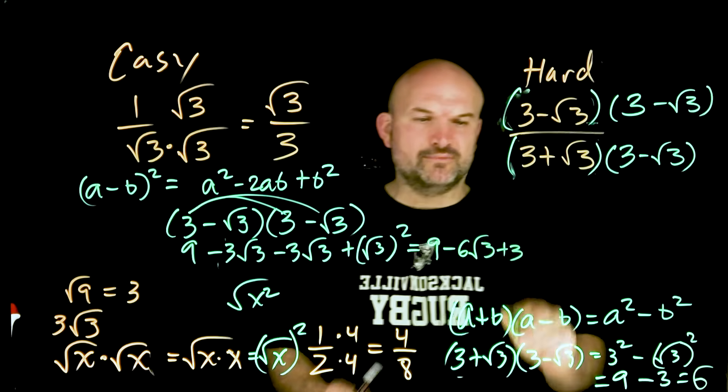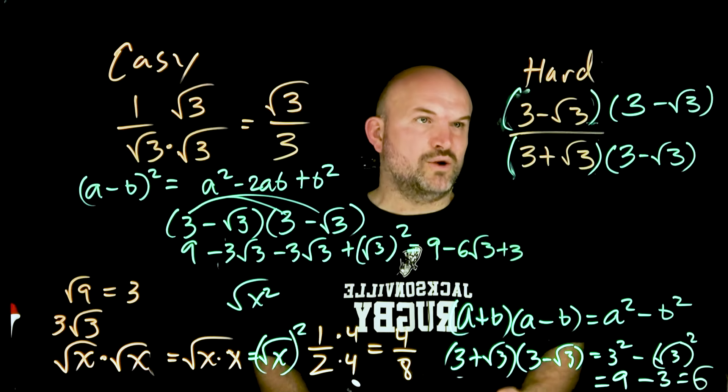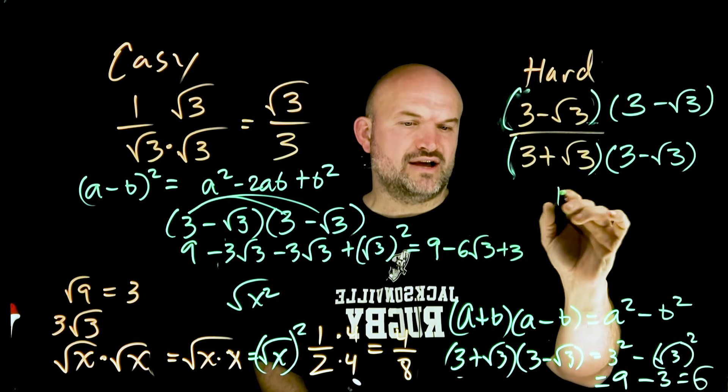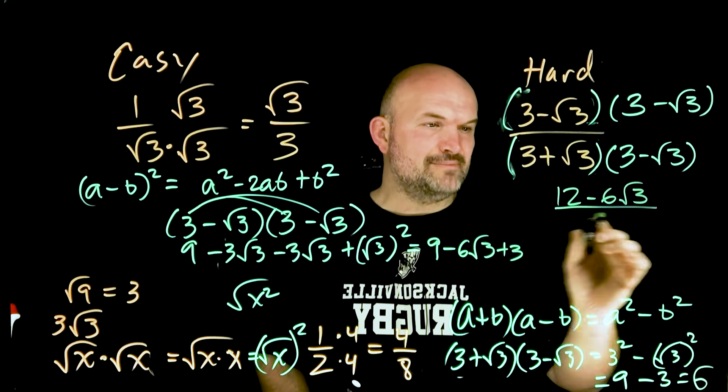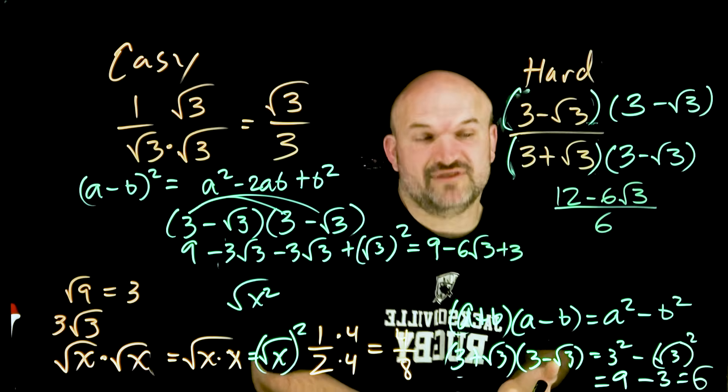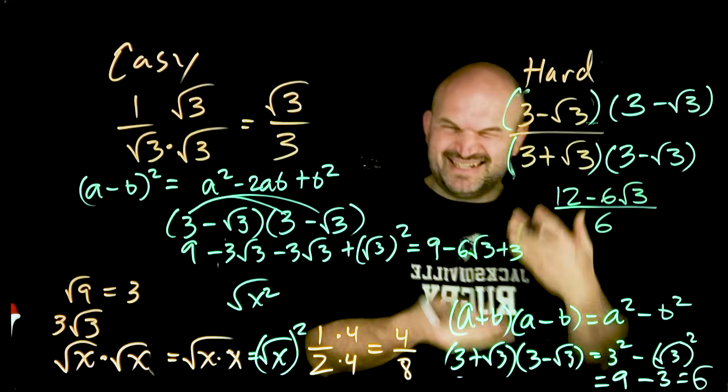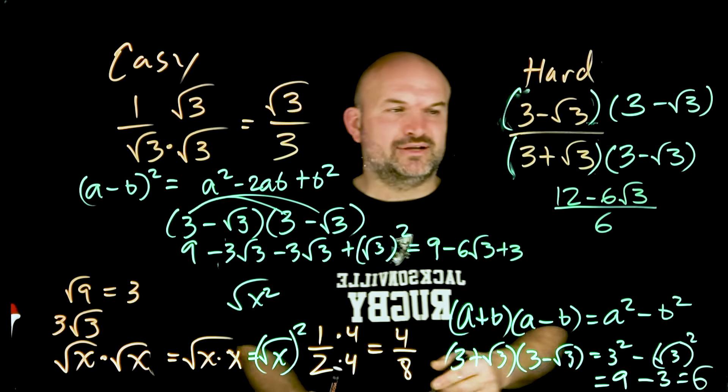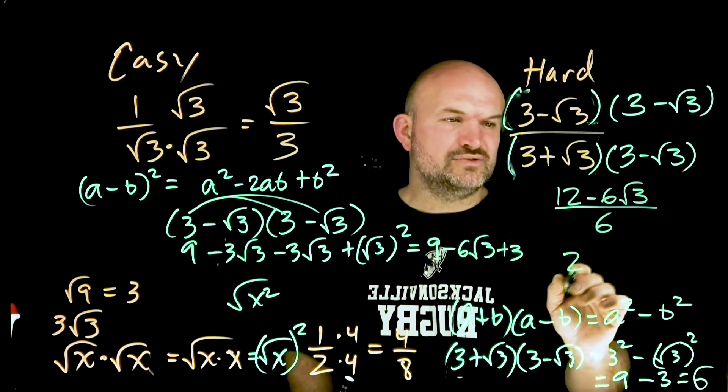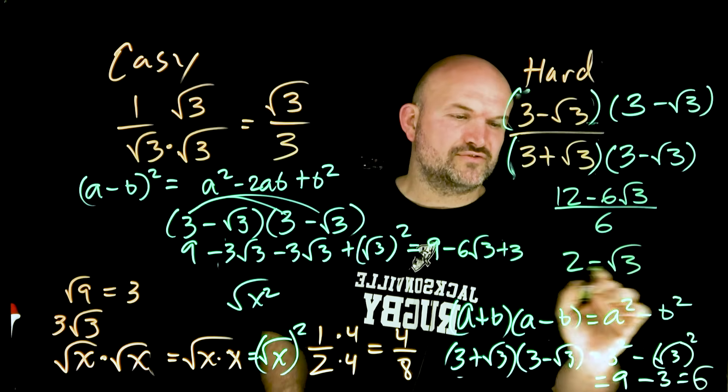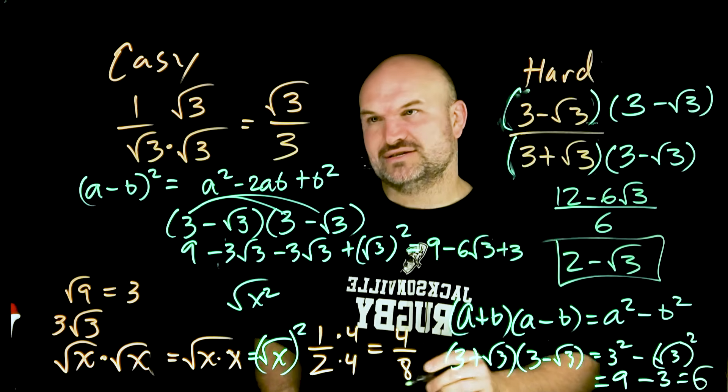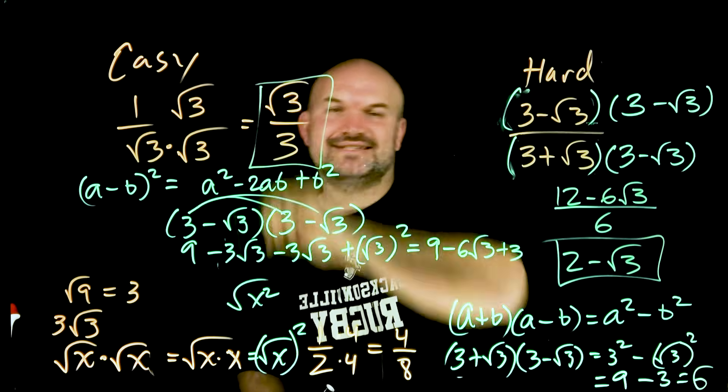So that is going to be my new numerator, which 9 plus 3 is going to be a 12. So let's go ahead and rewrite it over here. So I have a 12 minus a 6 square root of 3 divided by a 6. We can simplify this one more time. That's why this is a hard one. It just takes a little bit more steps for us to be able to do. 6 divides into 12 two times. 6 divides into negative 6. That would be a negative 1 square root of 3. And that is going to be our simplified answer.